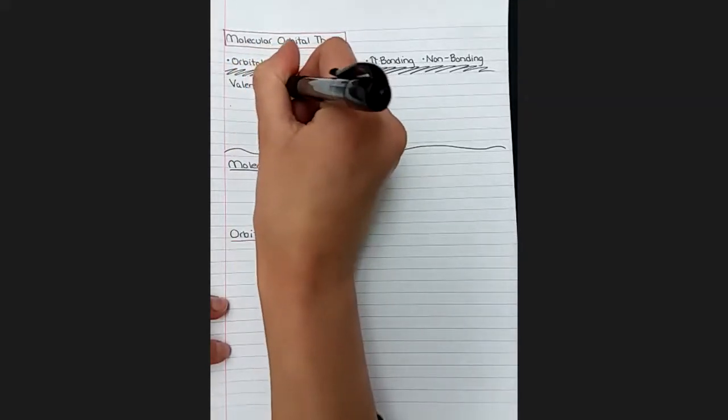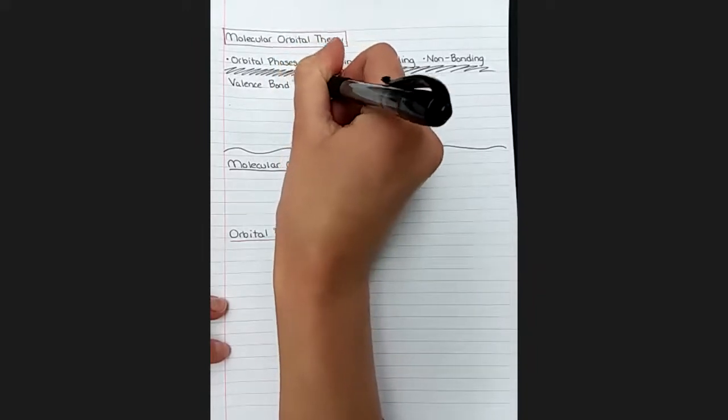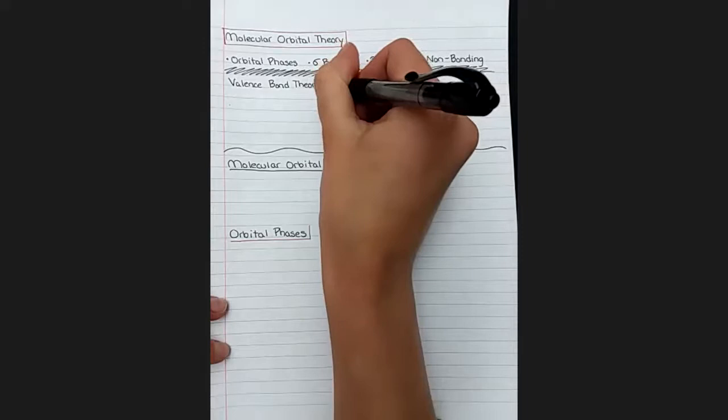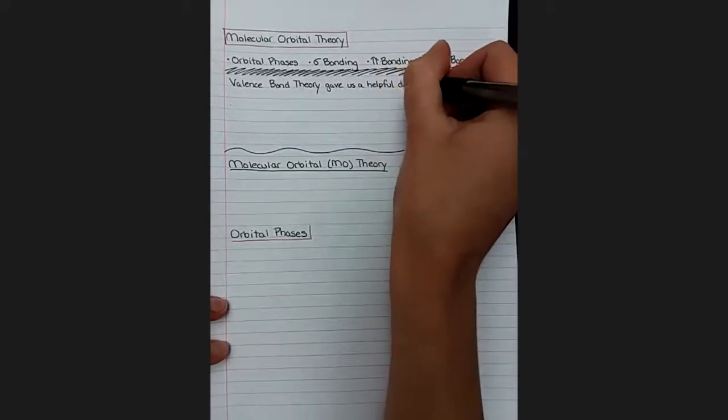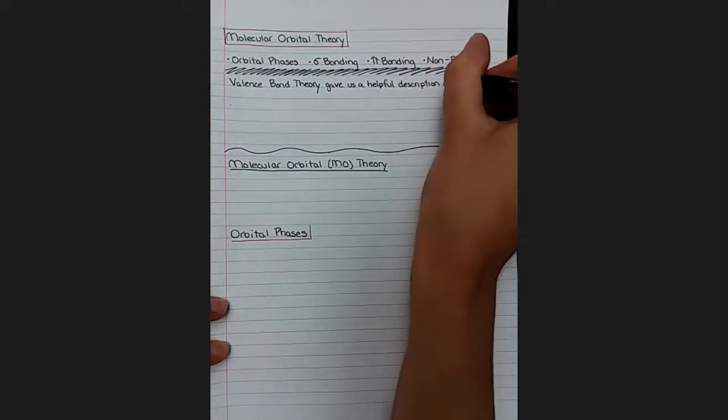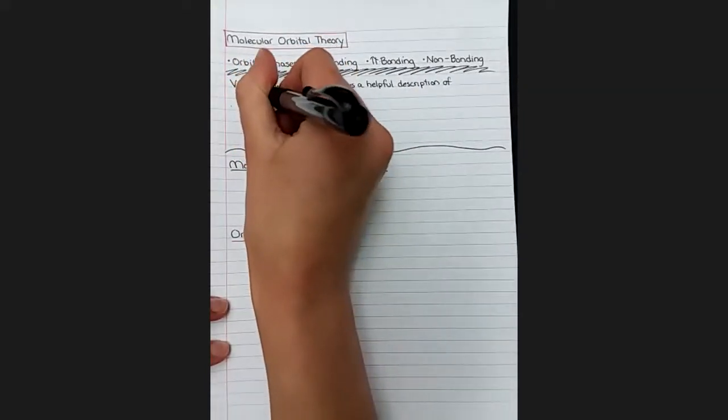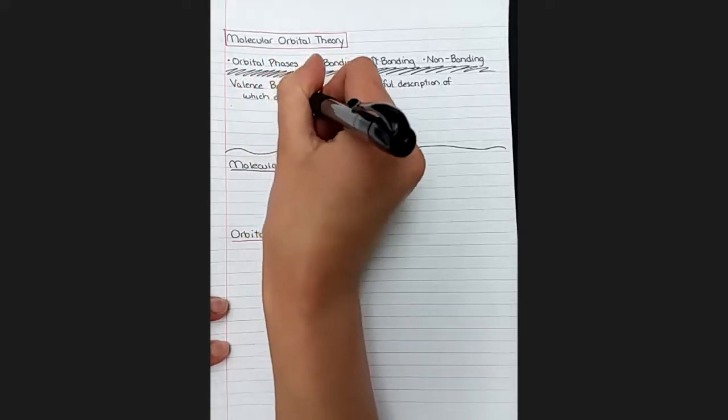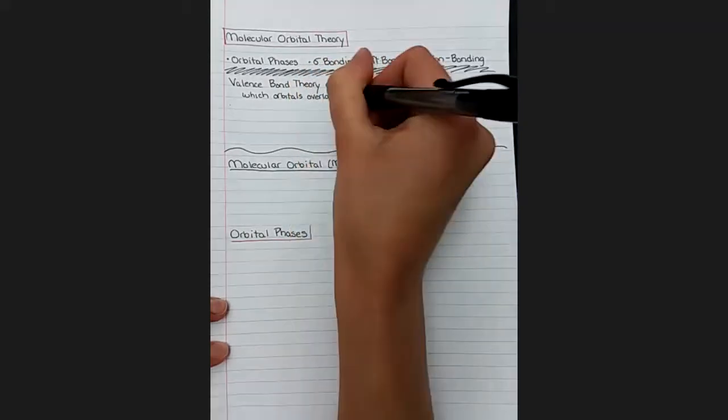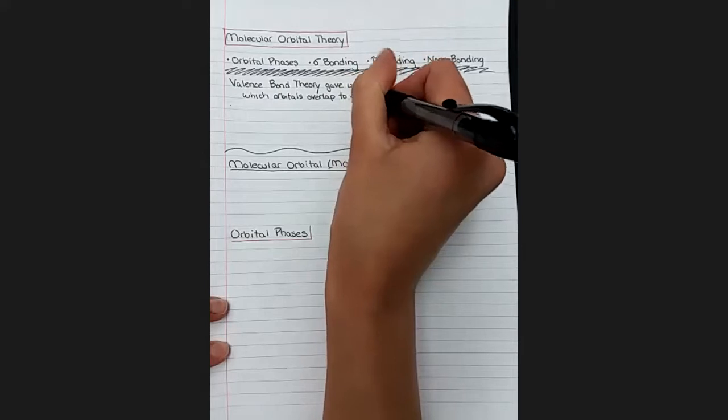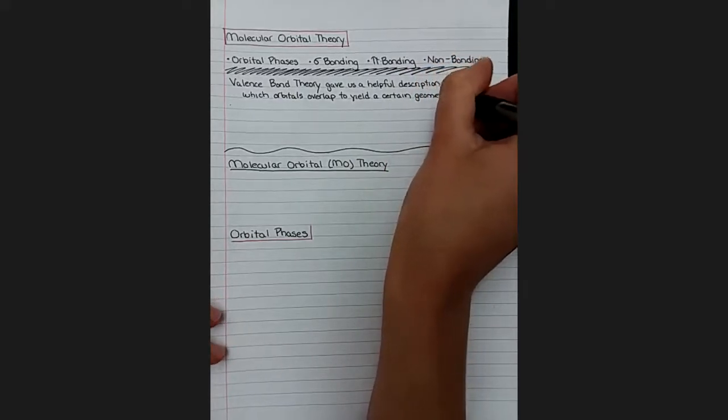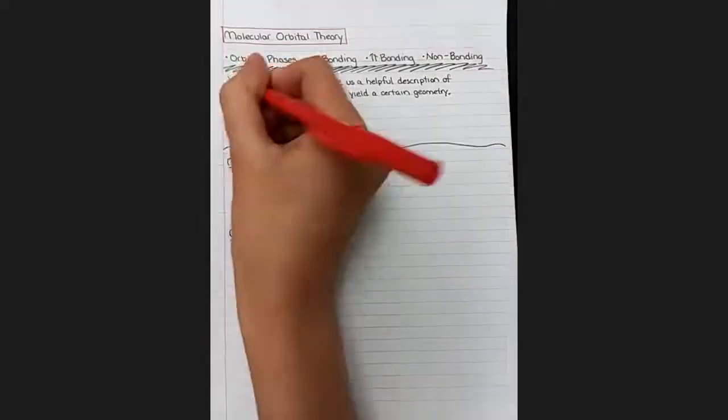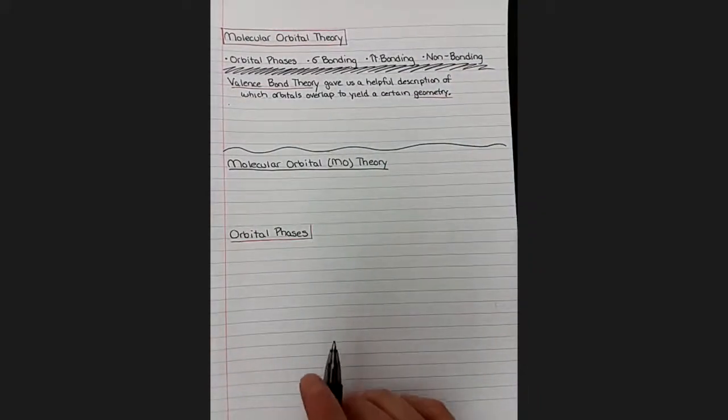Let's go back to what we talked about before, valence bond theory, which was very useful and is still widely used to explain how bonding works. Valence bond theory gave us a helpful description about which orbitals overlap to give a certain geometry. That was one of the most useful parts of valence bond theory, its use in predicting the geometry of a molecule, what shape it is, and what angle those orbitals sit at in order to hold the different electron groups.